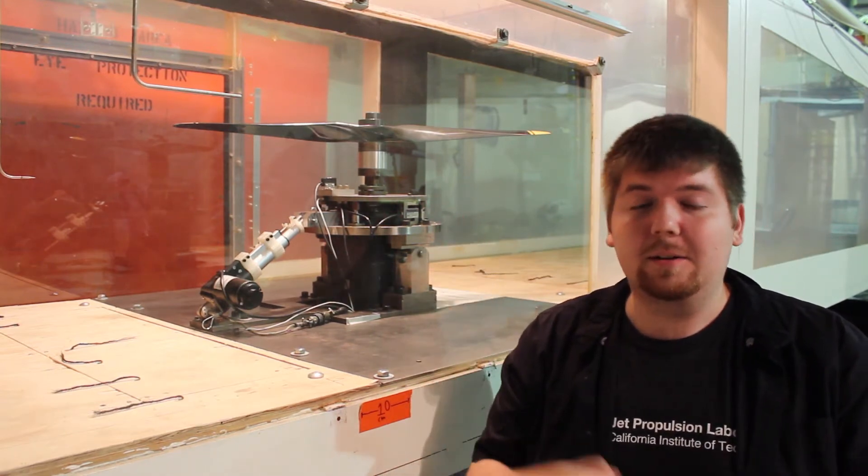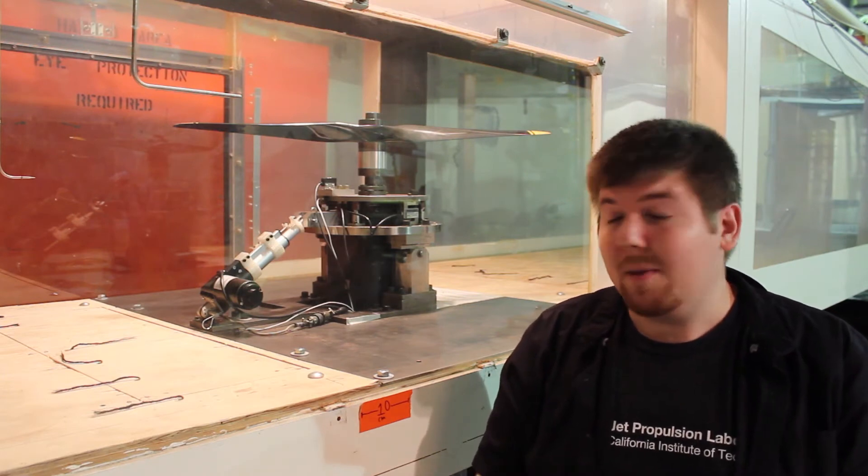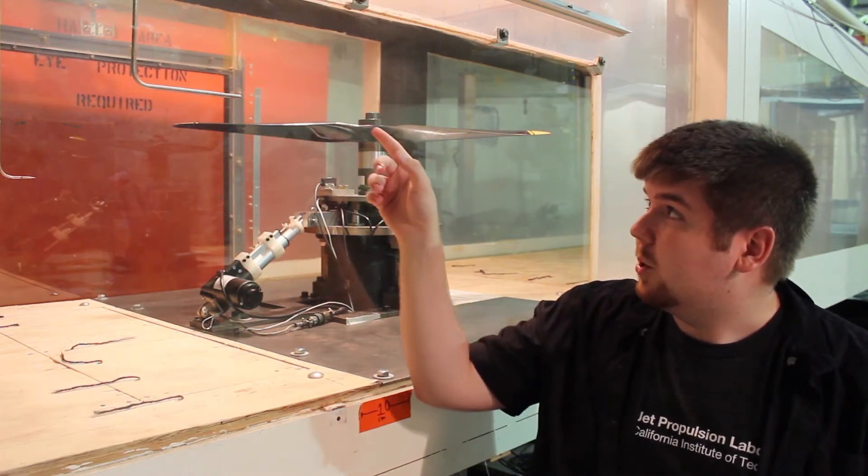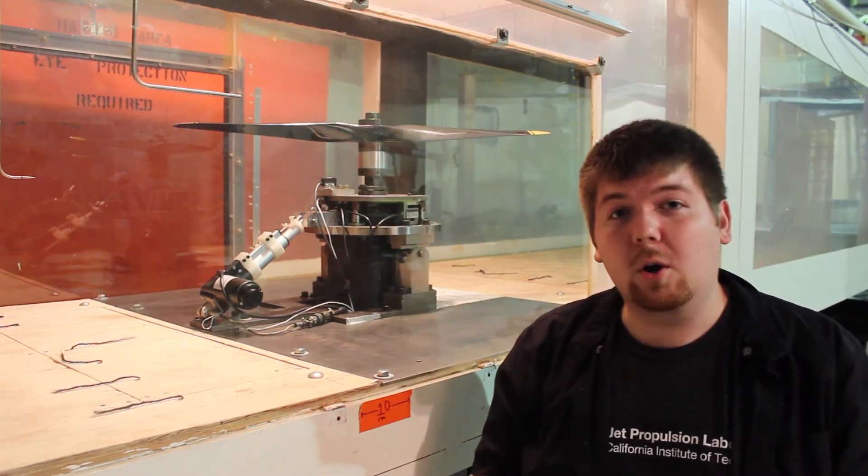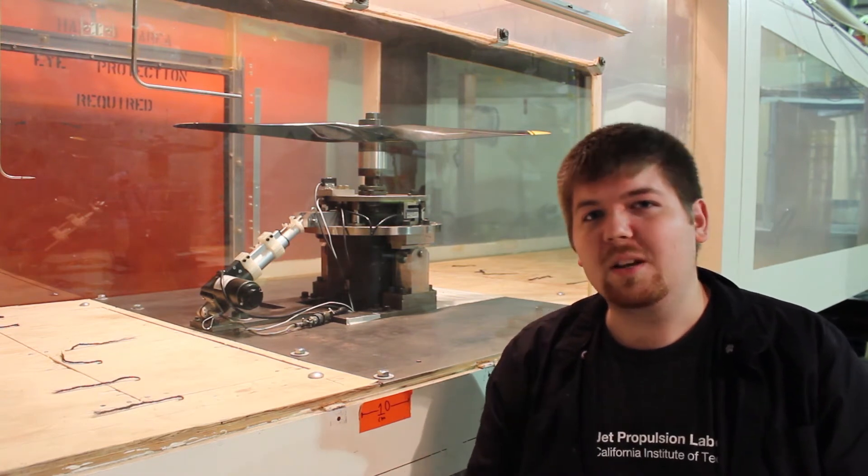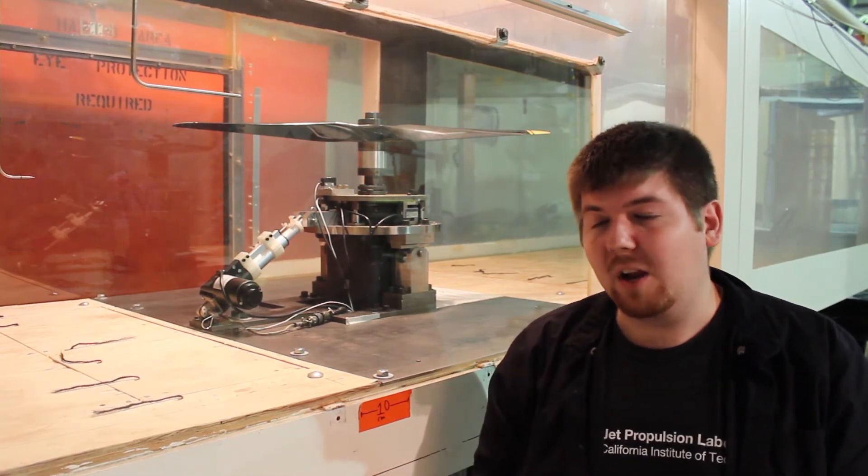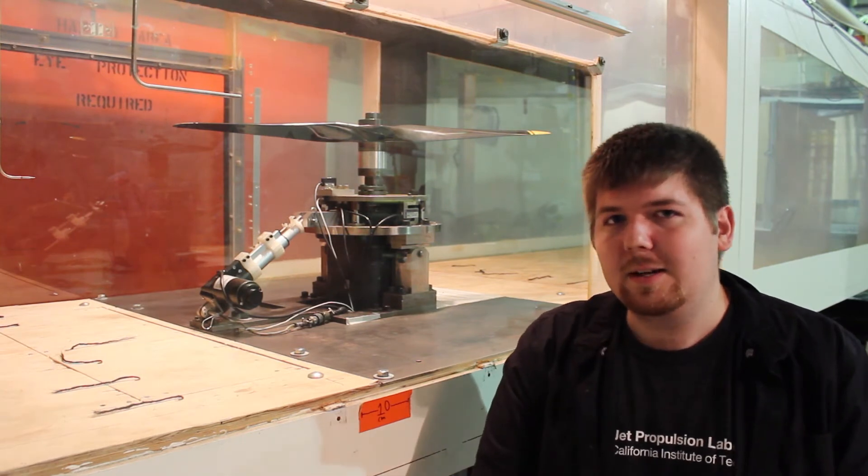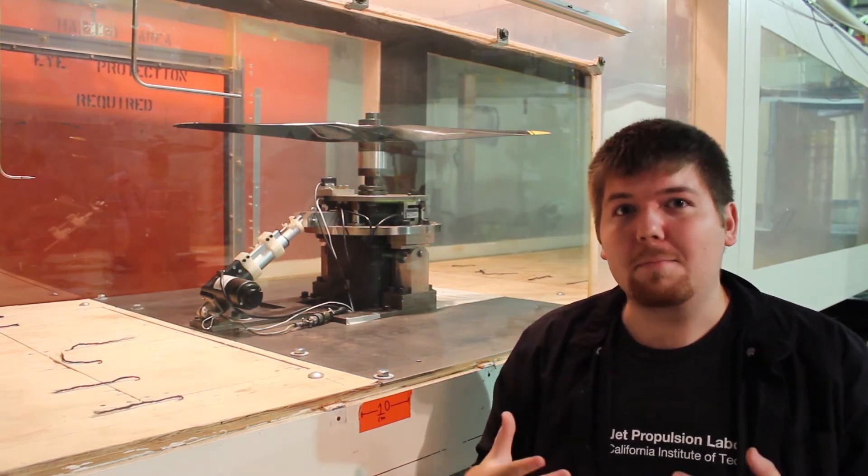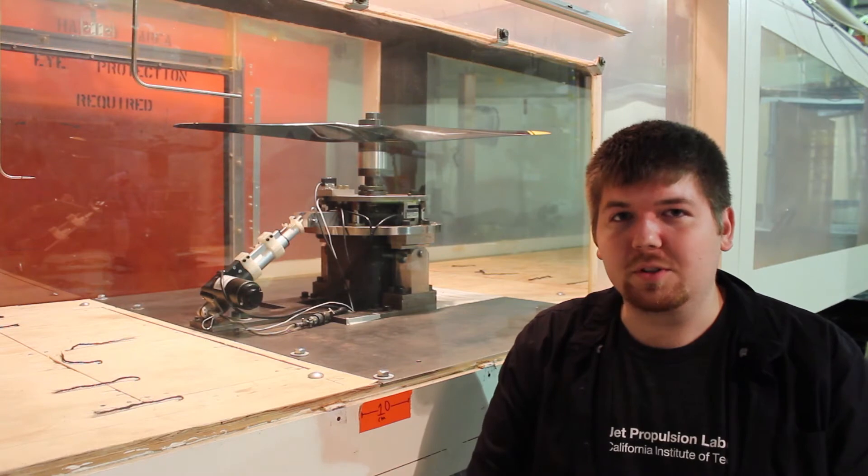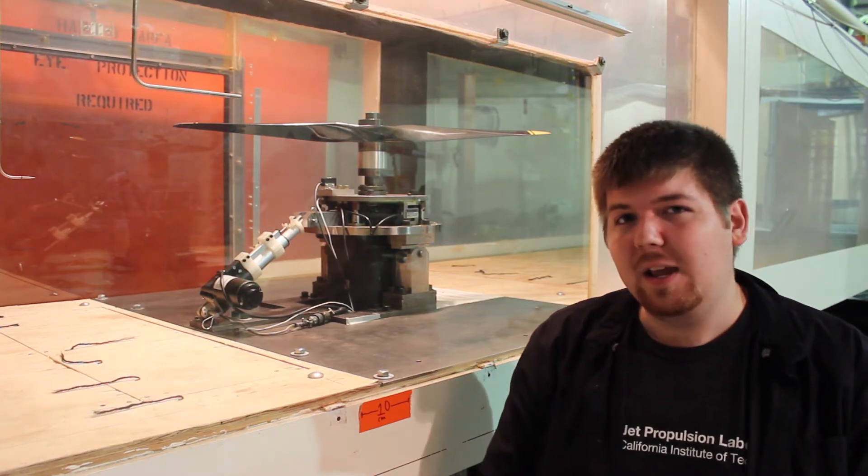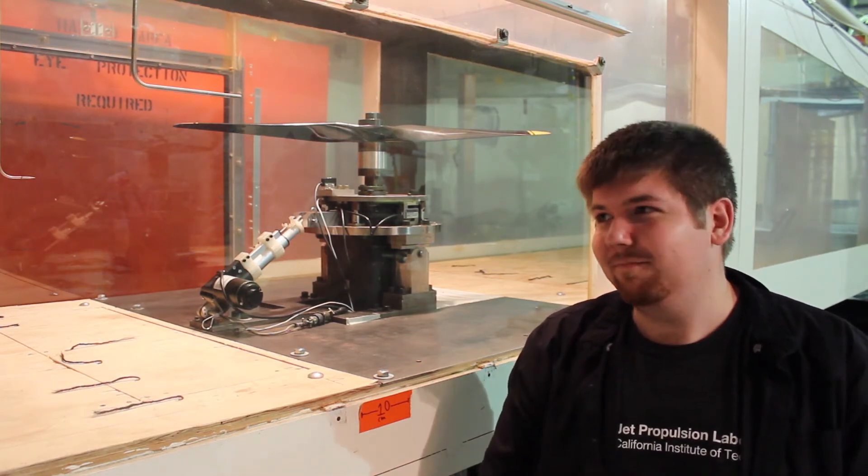We measure wind speed with these L-shaped tubes you might be able to see right there. Those are called pitot tubes. You might see pitot tubes on airplanes, aircraft in general, and in other wind tunnels like this. These are only a couple of the many variables that we have to account for to understand how this rotor behaves in Martian atmosphere. That's my bit. Thanks.